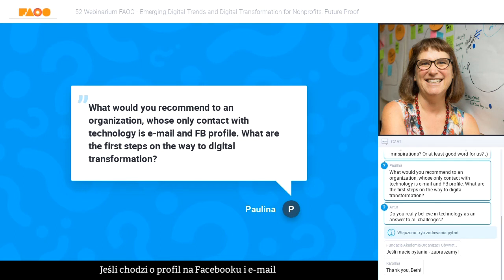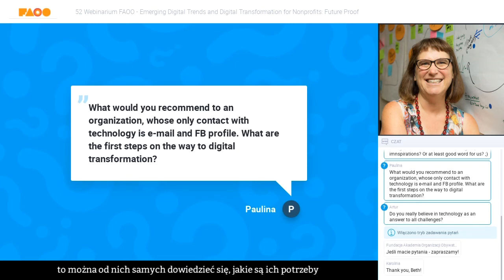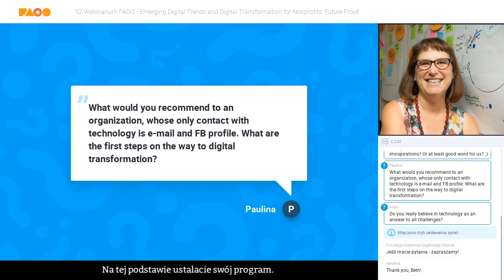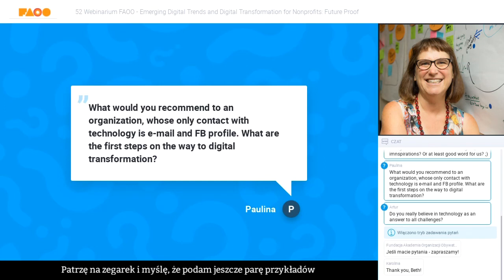For engaging external constituents via email and Facebook, a first step would be to learn from them what their needs are and what the best way to communicate with them is, and then begin to shape and develop your program from there.